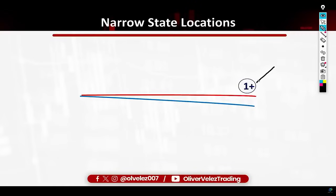If you get an elephant bar in that location, it's not 70% follow-through — it's now 80%. A bottoming tail bar there goes from 70% to 80%. Dual bottoming tail bars there are practically 100% guaranteed — dangerous to say, but practically, almost.